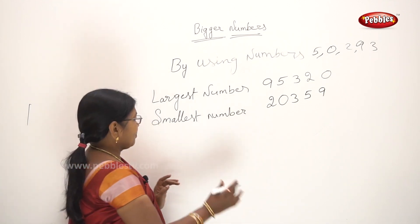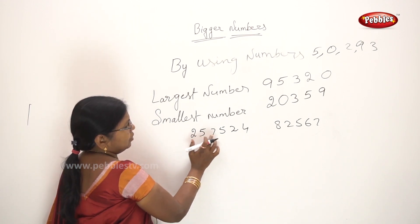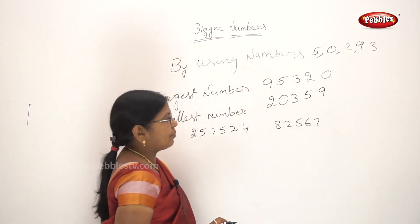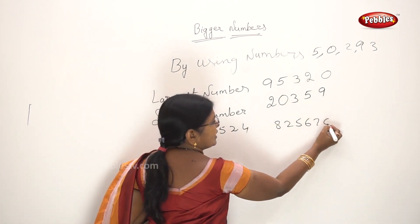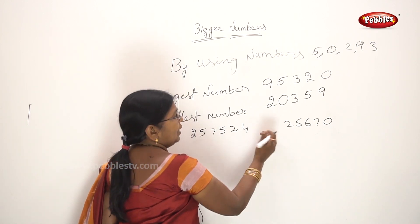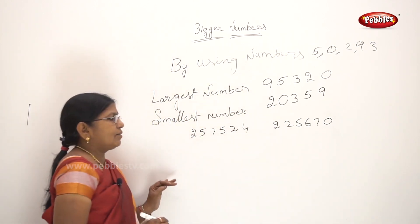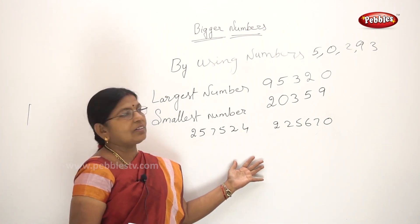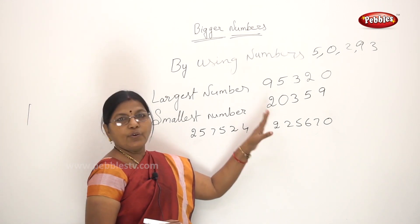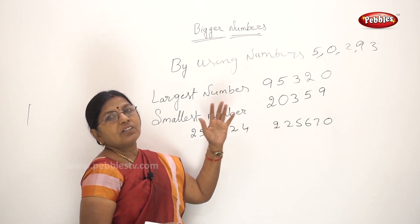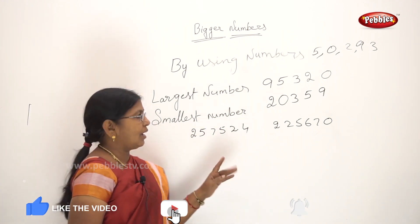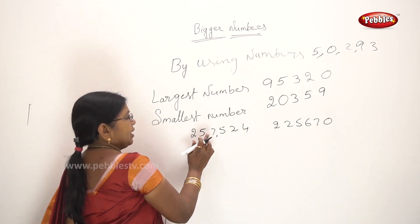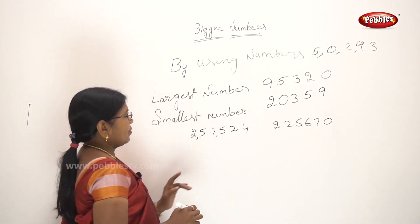What digits are here? 1, 2, 3, 4, 5, 6 — that is 6 digits. Here: 1, 2, 3, 4, 5 — that is 5 digits. We have 6 digits here and also 6 digits there. How do we compare them? First, we will show the periods: units period, hundreds period, thousands period, lakhs period. We can write: ones, tens, hundreds — comma — thousands, ten-thousands — comma — lakhs.